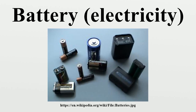High drain loads such as digital cameras can reduce total capacity, as happens with alkaline batteries. For example, a battery rated at 2 amp-hours for a 10 or 20-hour discharge would not sustain a current of 1A for a full 2 hours as its stated capacity implies.